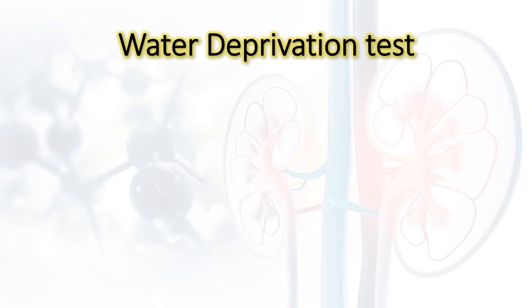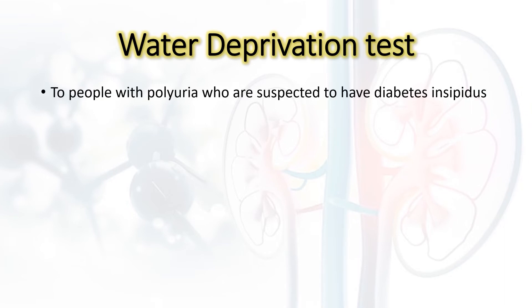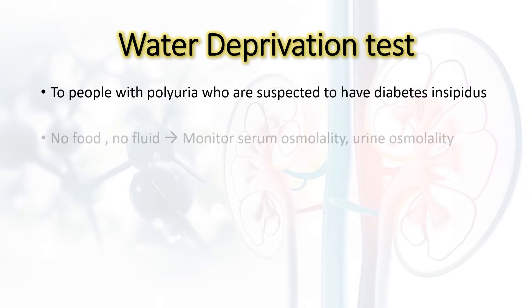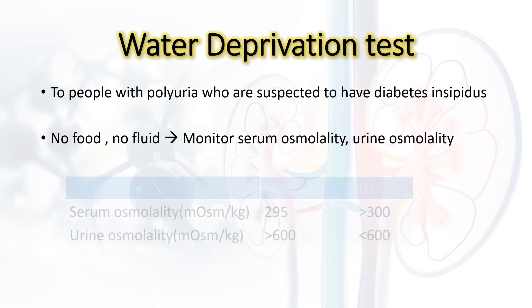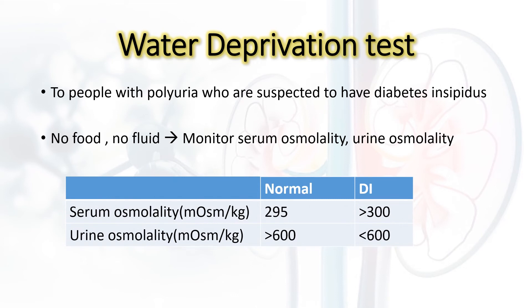Doctors perform a water deprivation test on patients with polyuria to diagnose or exclude diabetes insipidus, because other conditions like psychogenic polydipsia also produce polyuria. The patient is kept deprived of fluids for eight hours. During this time, plasma osmolality is measured hourly, and urine volume and osmolality are measured every two hours. If serum osmolality becomes more than 300 milliosmol per kilogram, the patient has diabetes insipidus.